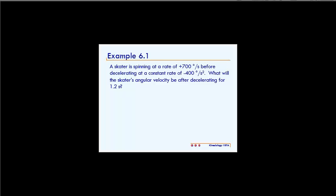This is example 6.1. It reads: A skater is spinning at a rate of positive 700 degrees per second before decelerating at a constant rate of negative 400 degrees per second squared. What will the skater's angular velocity be after decelerating for 1.2 seconds?